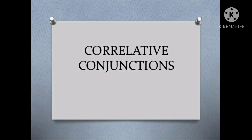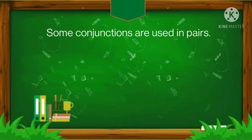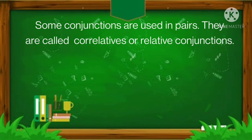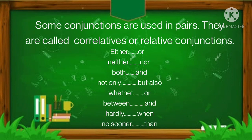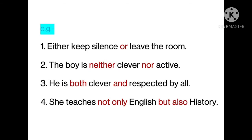Now let's learn about correlative conjunctions. Conjunctions used in pairs are called correlatives or correlative conjunctions. They are: either/or, neither/nor, both/and, not only/but also, whether/or, between/and, hardly/when, no sooner/than. For example: Either keep silence or leave the room. The boy is neither clever nor active. He is both clever and respected by all. She teaches not only English but also history.